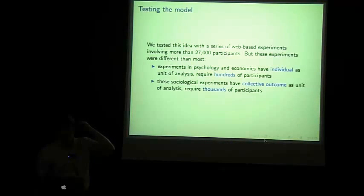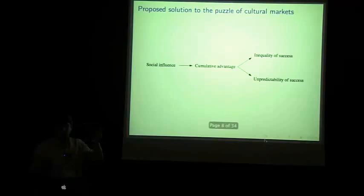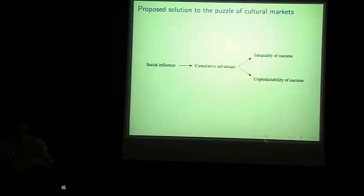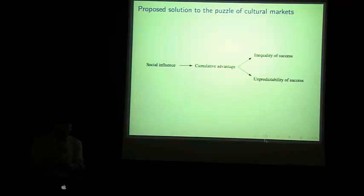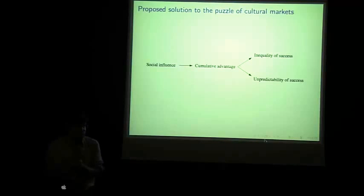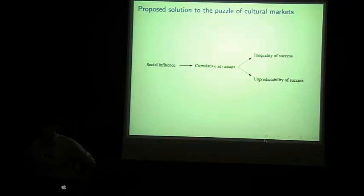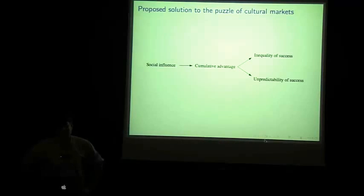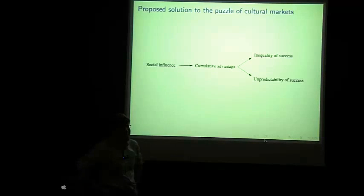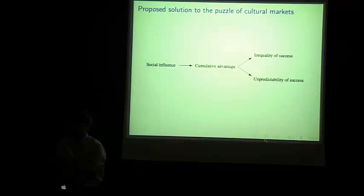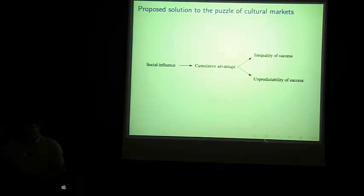Now, the problem is that this argument is very difficult to test. Because I'm sort of saying basically, let's return to Harry Potter. I might say, Harry Potter is lucky. It's the result of a cumulative advantage process created by social influence. And you might say, no, Harry Potter is just good. And I might say, no, it's really lucky. And you might say, no, I've read it, and it's good, and there's something about boy wizards. So, basically, we could go on and on with this conversation forever, because the one data point that we have is consistent with both of our explanations.